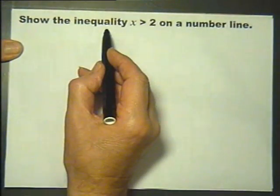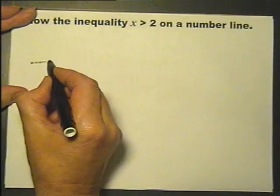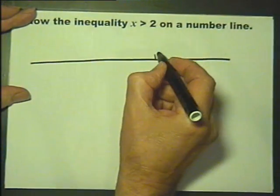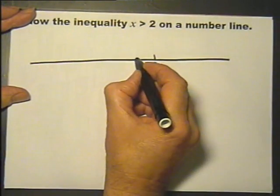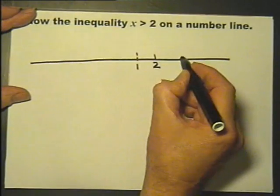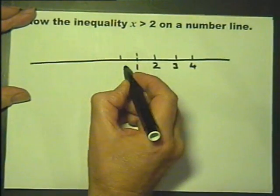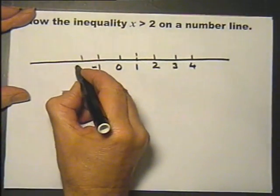If we're going to show the inequality x is greater than 2 on a number line, all we need is a number line with numbers on it. As long as it includes the number we're looking at and a few more, I'm going to try and normally include 0 if it's not too far away, and that will do.